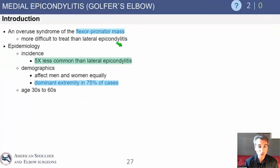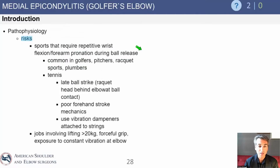It's overuse of that flexor pronator mass. It's less common than lateral epicondylitis and most commonly affects the dominant arm. Anything that's repetitive is the key concept — these are repetitive, overuse activities.